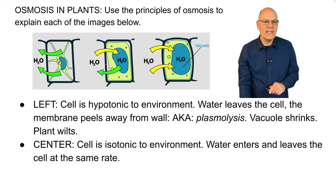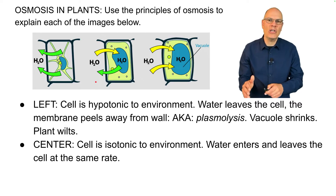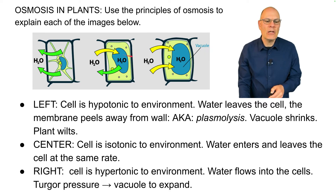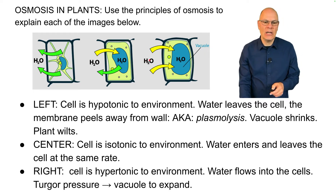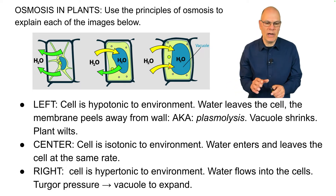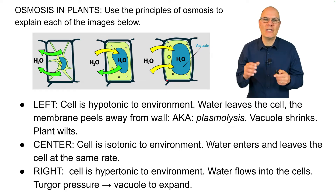In the middle, the cell is isotonic to its environment — a new term. Isotonic means the solute concentration and water concentration are the same on both sides of the membrane, so water enters and leaves at the same rate. On the right side, the cell is hypertonic to its environment, so water flows into the cell. That osmotic pressure, in the case of plants, is called turgor pressure. It causes the vacuole to expand and pushes the membrane against the cell wall — a good situation that makes plants full, firm, and not wilted.